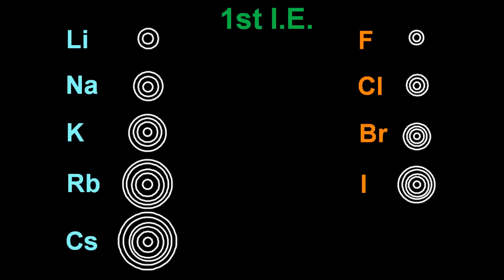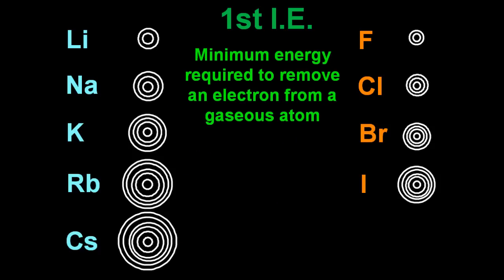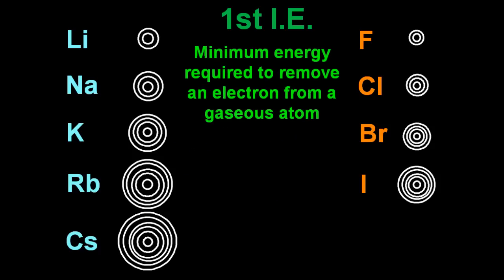First ionization energy. Well, hopefully you still remember the definition. That's the minimum energy required to remove an electron from a gaseous atom. You've got to say gaseous. There are two things that are important here.